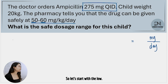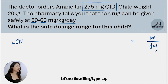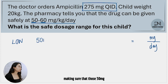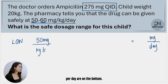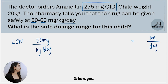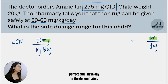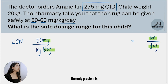Let's start with the low, using those 50 milligrams per kilogram per day. I'm going to plug it in making sure that those 50 milligrams are on the top, because my answer has milligrams at the top, and then kilogram per day are on the bottom. So I have milligrams in my numerator — perfect — and I have day in the denominator. The only problem is I still have kilograms there.